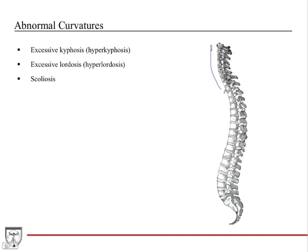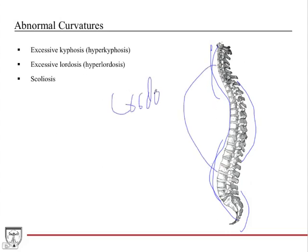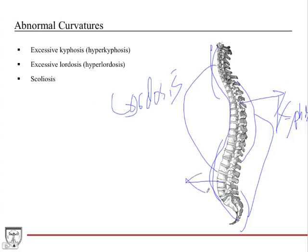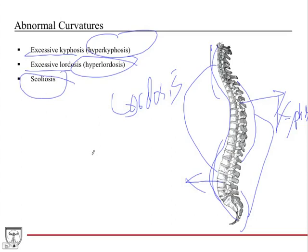Abnormal curvatures — the spine has a beautiful S-shape curvature to help displace weight. You have primary curvatures in the thorax and sacrum, and secondary curvatures in the cervical and lumbar called lordosis. These secondary curvatures are called lordosis; the primary curvatures are called kyphosis. We'll discuss what happens when these curvatures are excessive — excessive kyphosis, hyperkyphosis, excessive lordosis, hyperlordosis, and scoliosis, which is an abnormal lateral curvature of the spine.